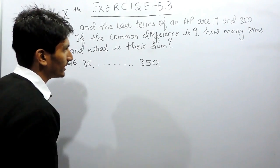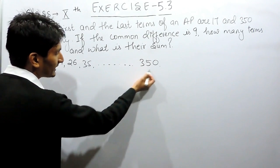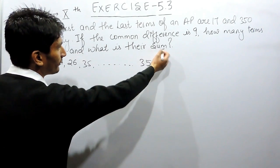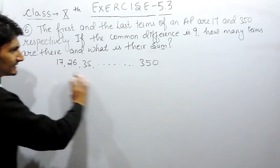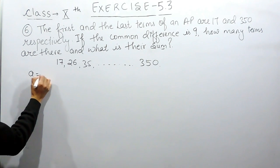So this is the AP for us. First of all, you have to find how many numbers are there in this AP, means how many terms are there in this AP, and then you have to find the sum of these numbers. So first of all, let's write down what is given to us.